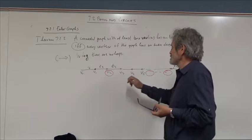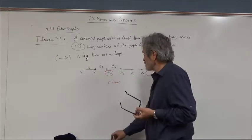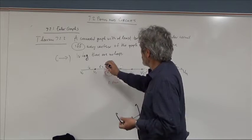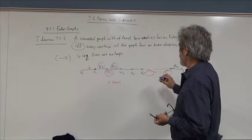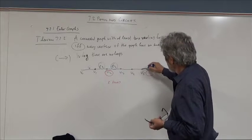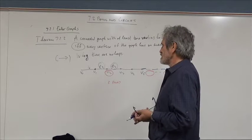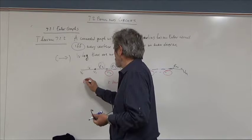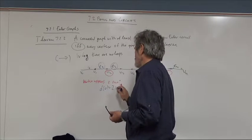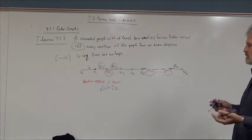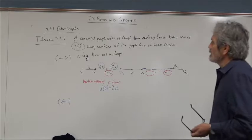Each time a vertex appears in the interior of the circuit it contributes one incoming edge and one outgoing edge. If vertex V appears k times, its degree is 2k — two edges per appearance — so the degree is always even. That proves the necessity direction.